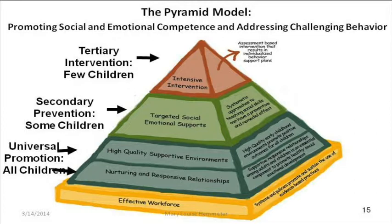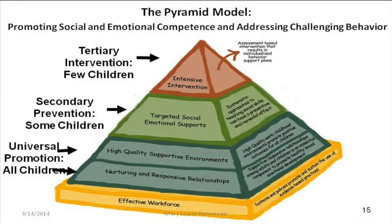Now I'm going to talk more specifically about the pyramid. My plan is to talk through each level quickly because I want to get to the implementation pieces. The bottom of the pyramid — the blue level — is what we consider universal practices, meaning what all children need. We divide that level into two parts: nurturing and responsive relationships, and high quality supportive environments.